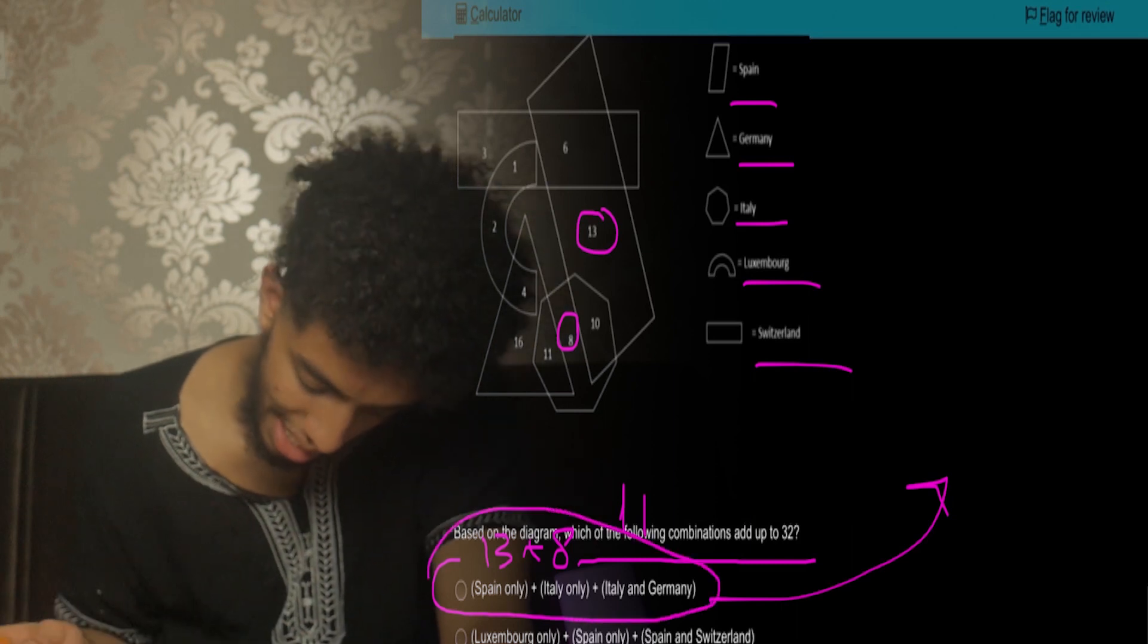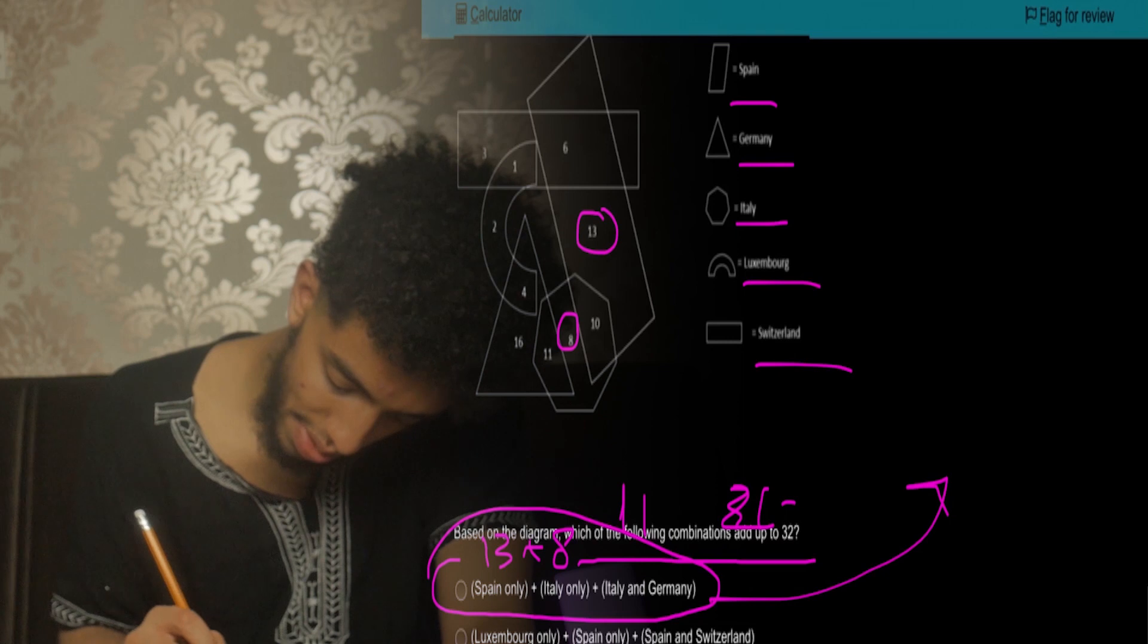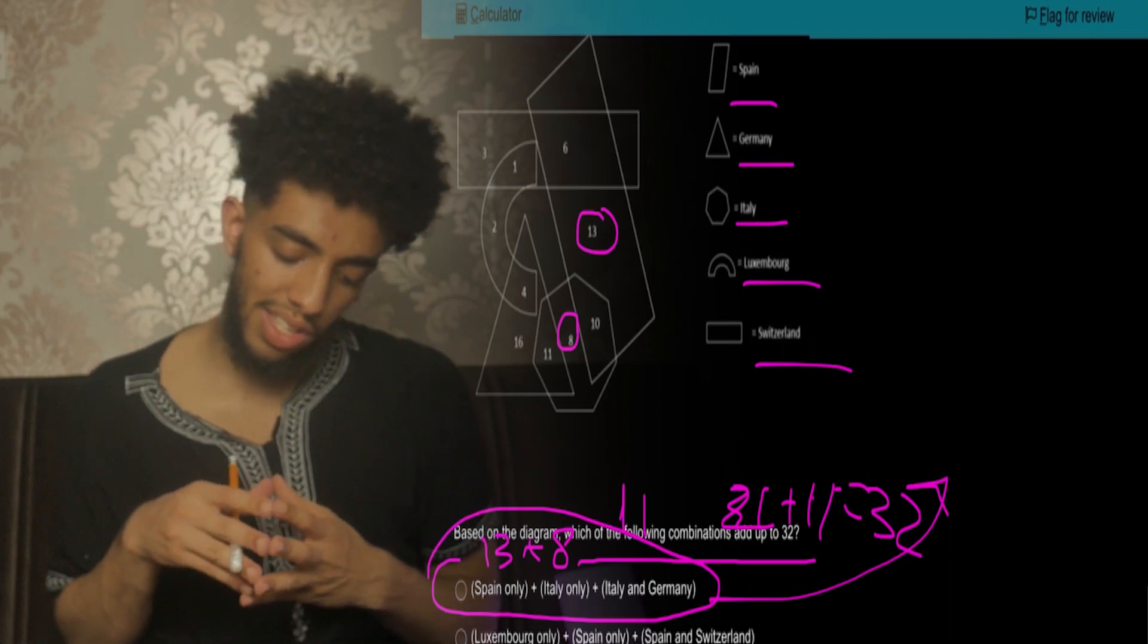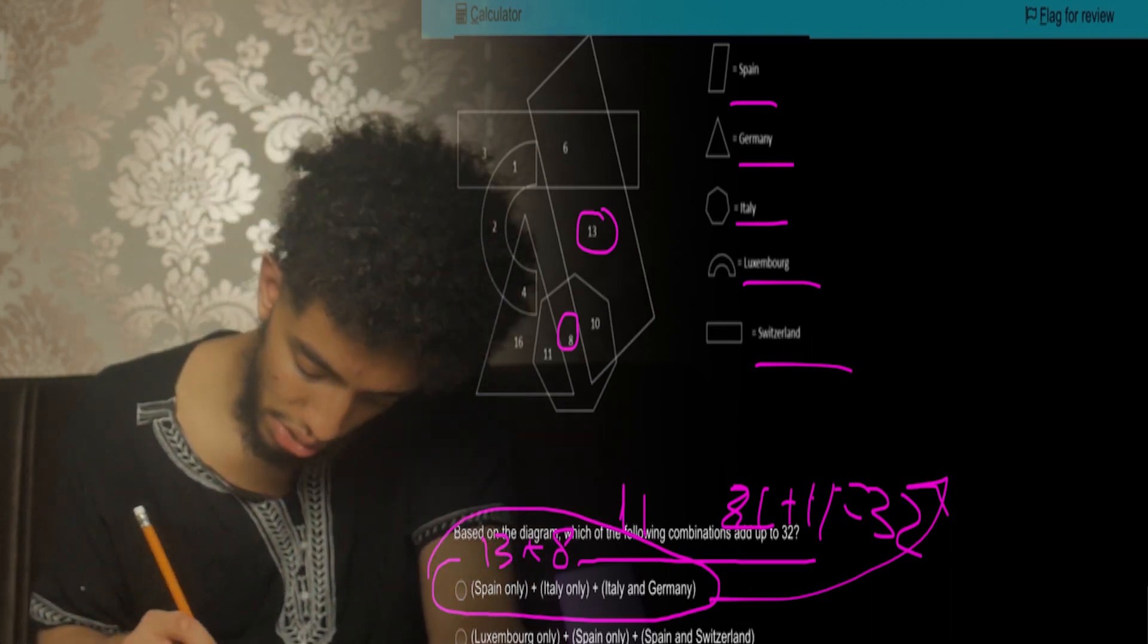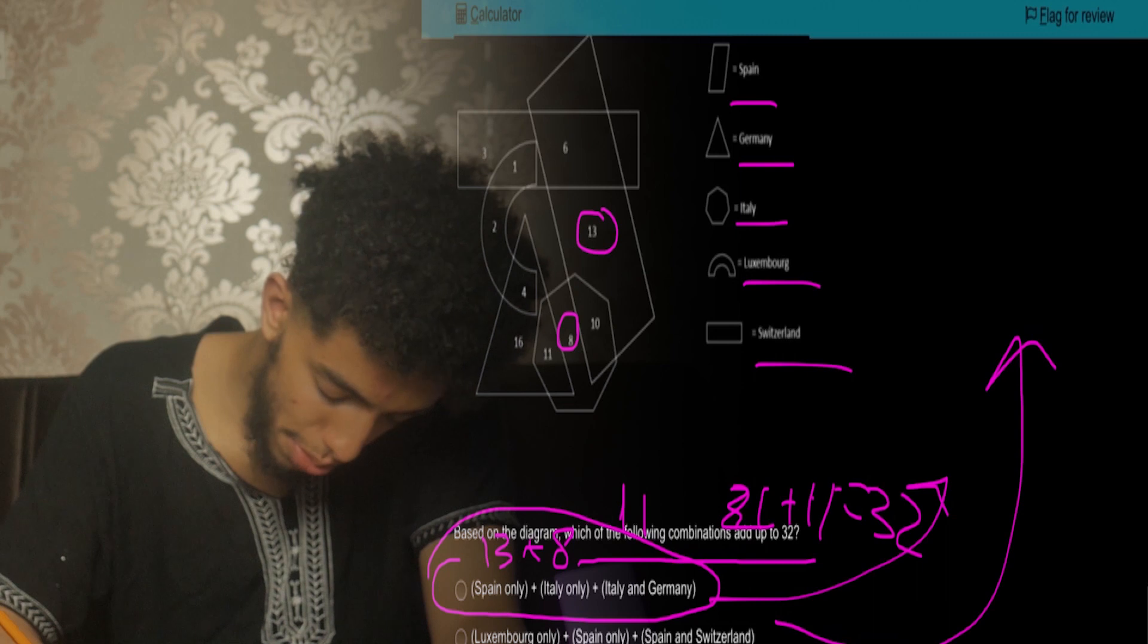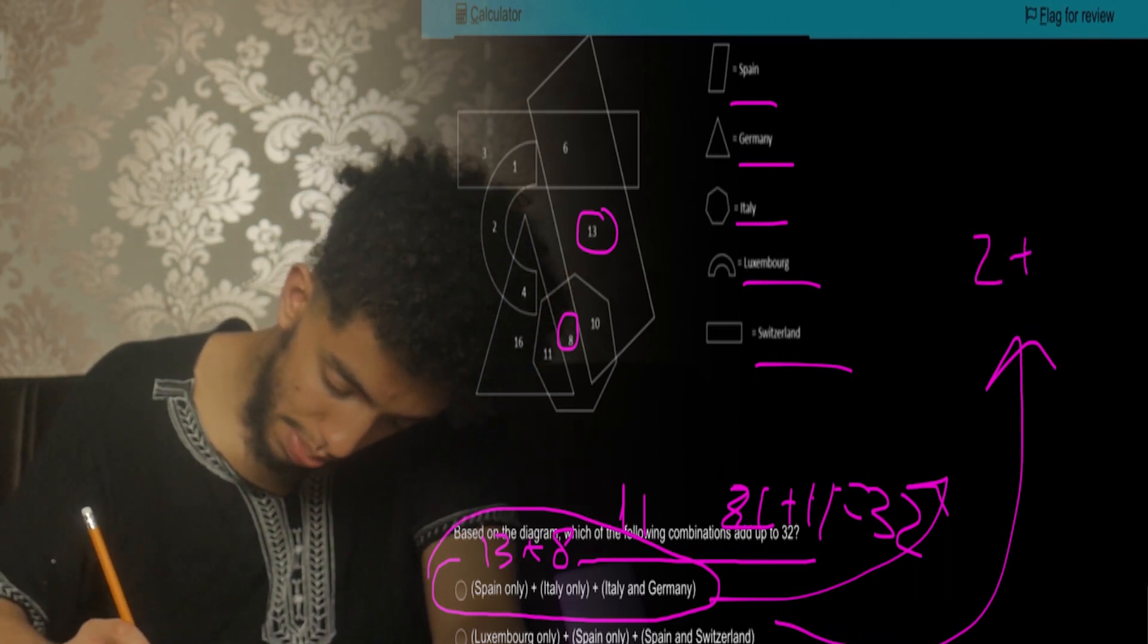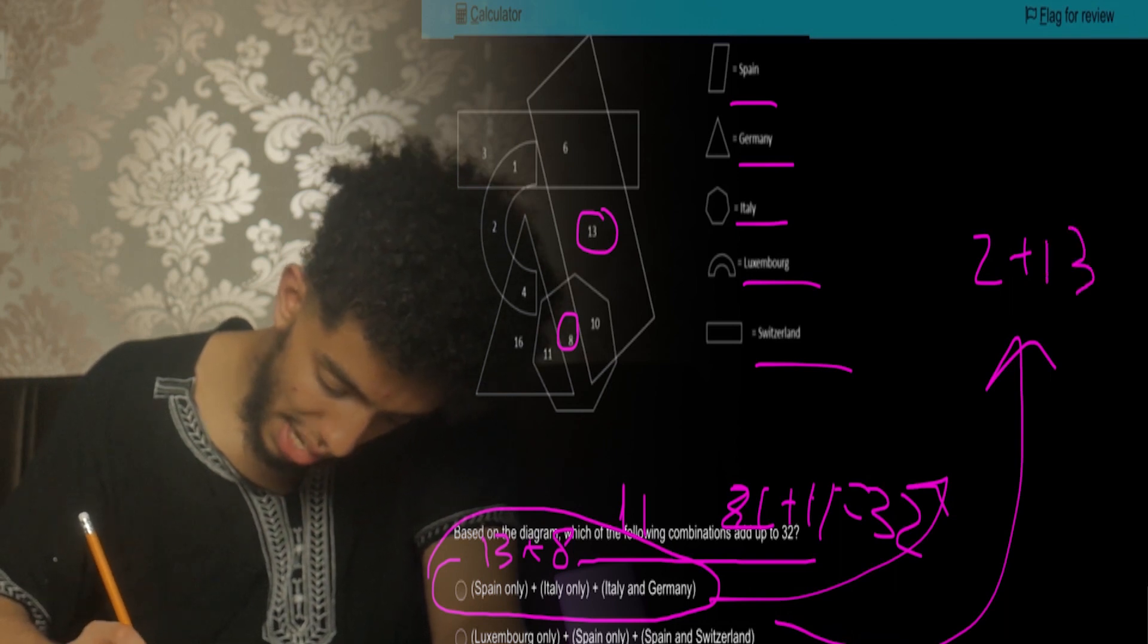And we don't even need to go through the other examples. That's why I'm saying as soon as you find the right example, you just go for it and skip to the next question. But we'll do for the sake of the video. Luxembourg only: Luxembourg is that dome-shaped thing, so it's 2 plus Spain only. Spain we know is the rhombus, 13, and Spain and Switzerland—Spain and Switzerland is 6. We know almost instantly that's not 32, that's 21. So there you go, we know it's not going to be this.